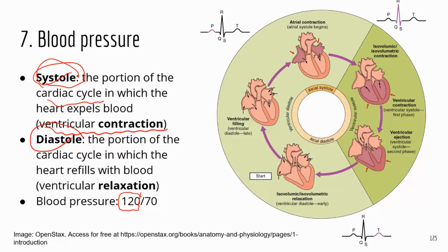Diastole is when the ventricles are relaxing. During ventricular relaxation, it's a perfect opportunity for the two atria to push blood into the ventricles. During ventricular relaxation, you get the diastolic pressure, which is the lower number in the reading. Make sure you know what systole and diastole mean.